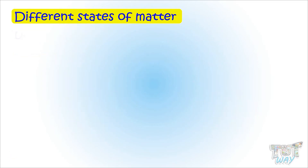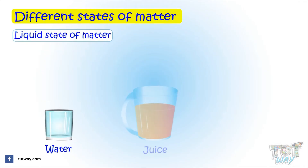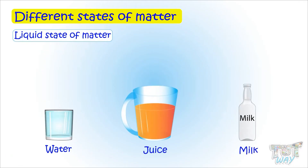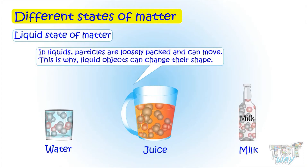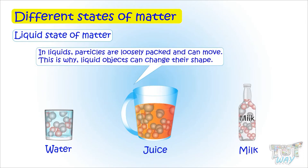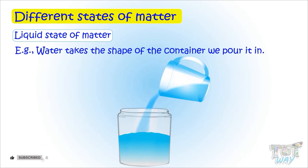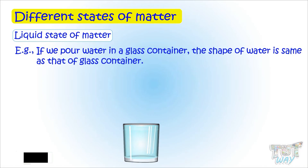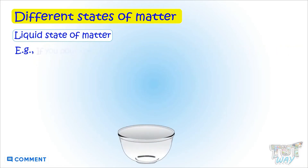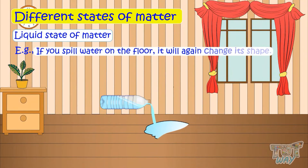Next we have liquids. Liquid objects like water, juice, and milk — just any liquid — the particles are loosely packed and can move. And this is why liquid objects can change their shape. Water takes the shape of the container we pour it into. If we pour water in a glass, the shape of water is the same as that of the glass. If you pour the same water in a bowl, it will take the shape of a bowl. And if you spill water on the floor, it will again change its shape.